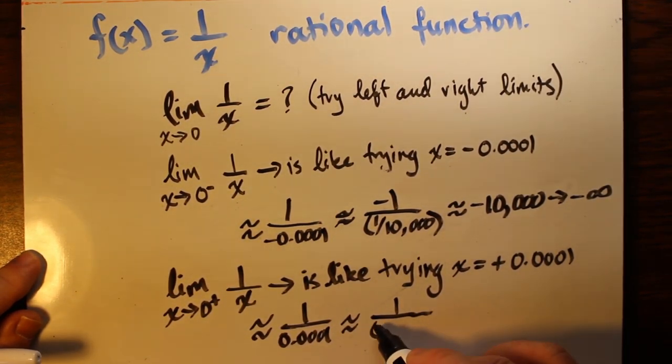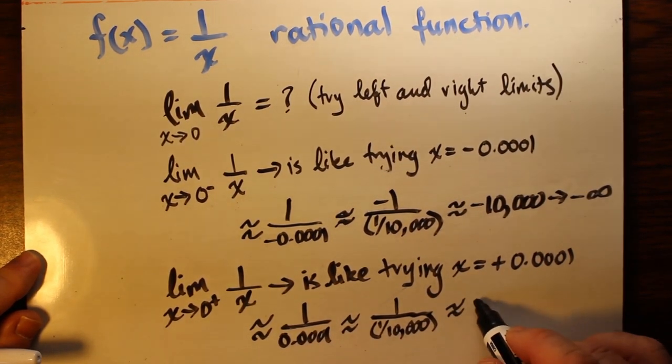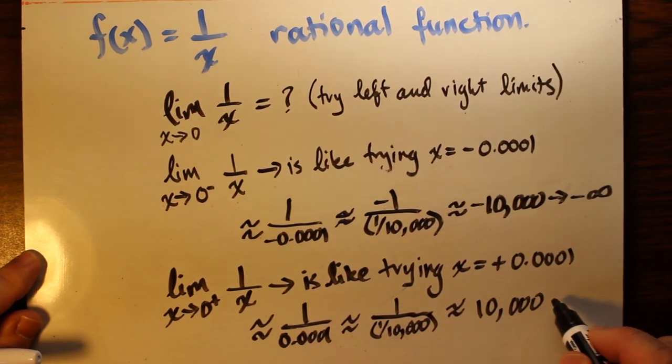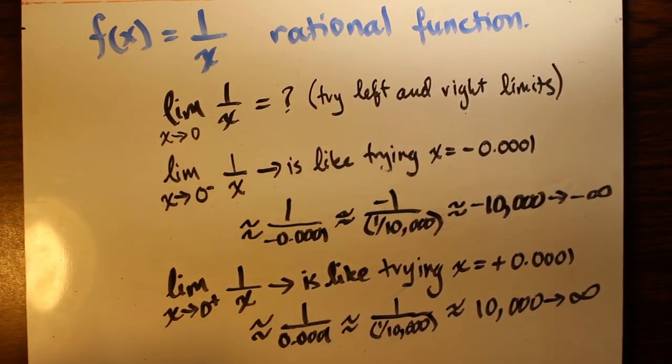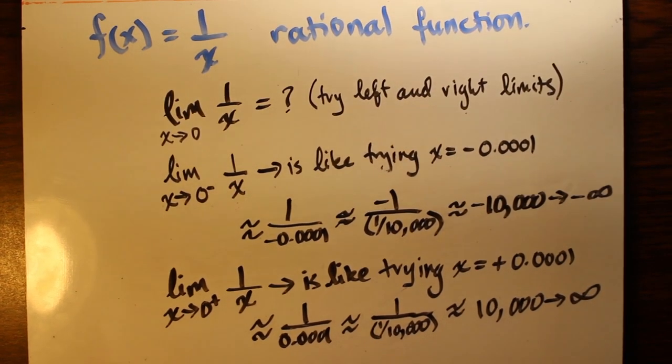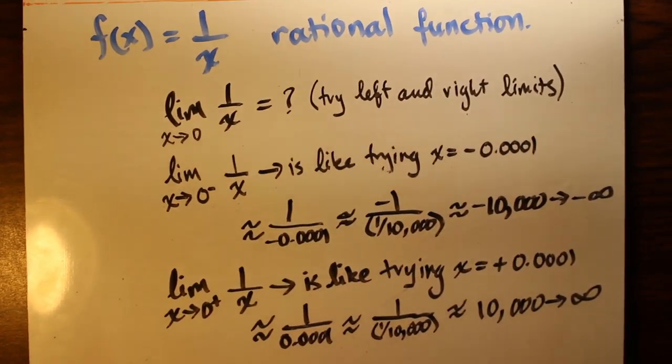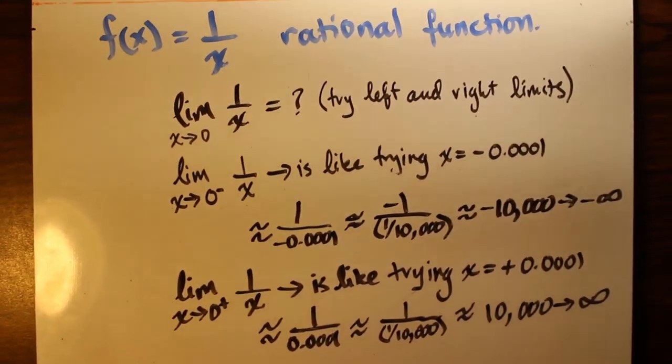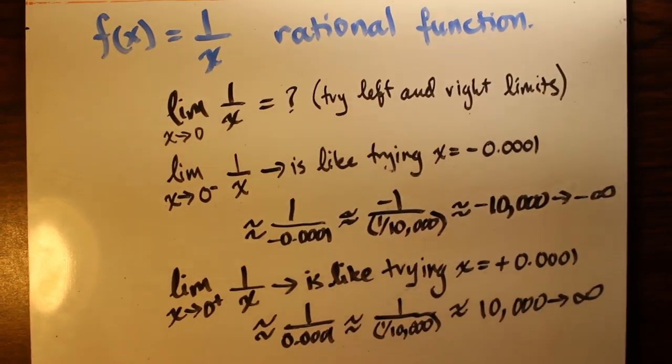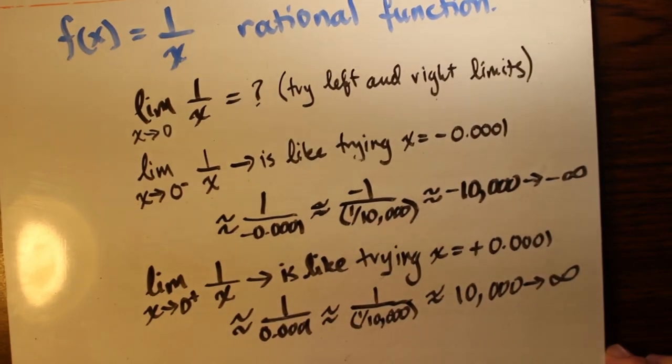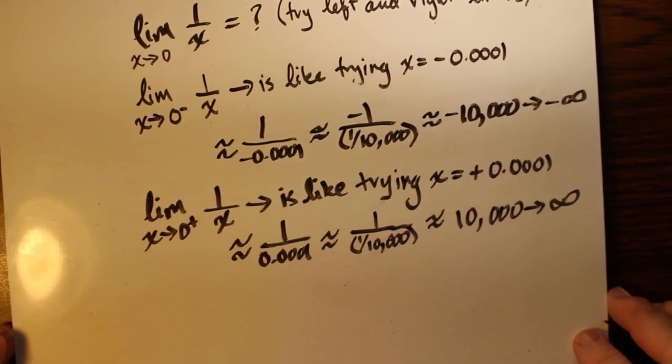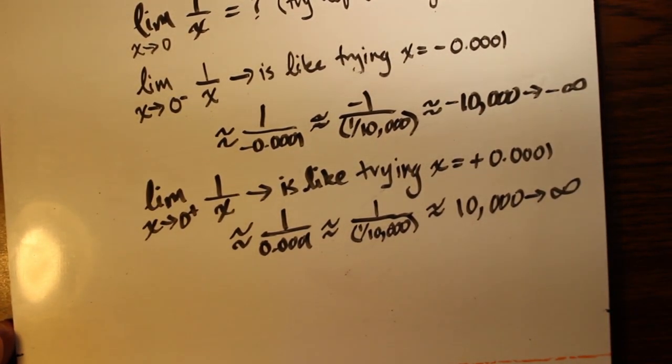And so x is approaching positive infinity, the evidence being that 1 over x, when we substitute a number super close to zero on the positive side, simply becomes a very large number. So we're using that to conclude that the function is approaching positive infinity.